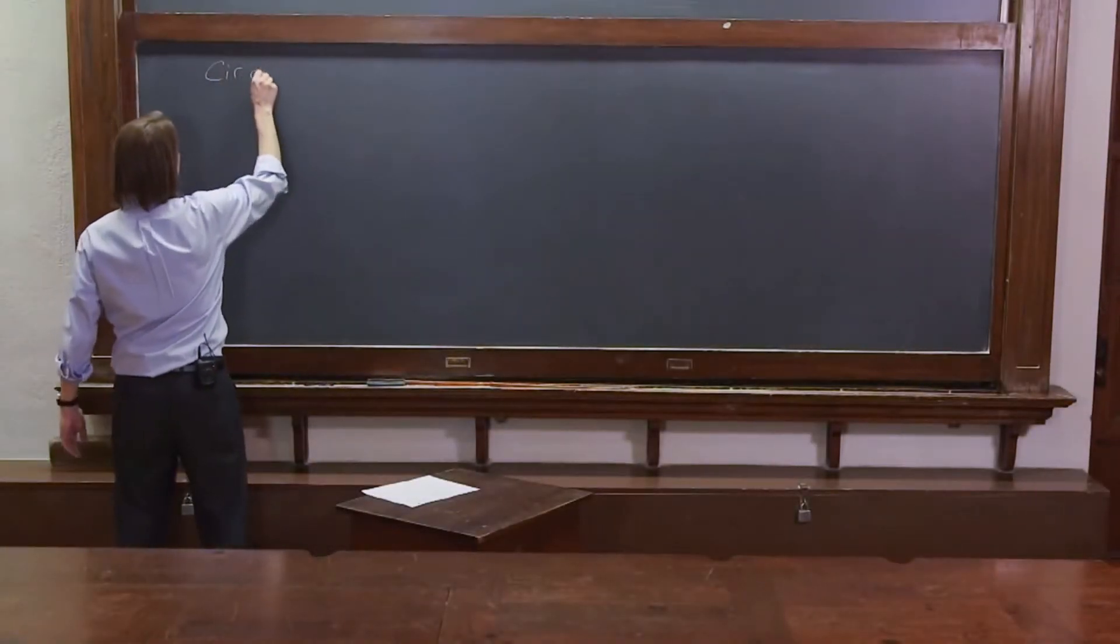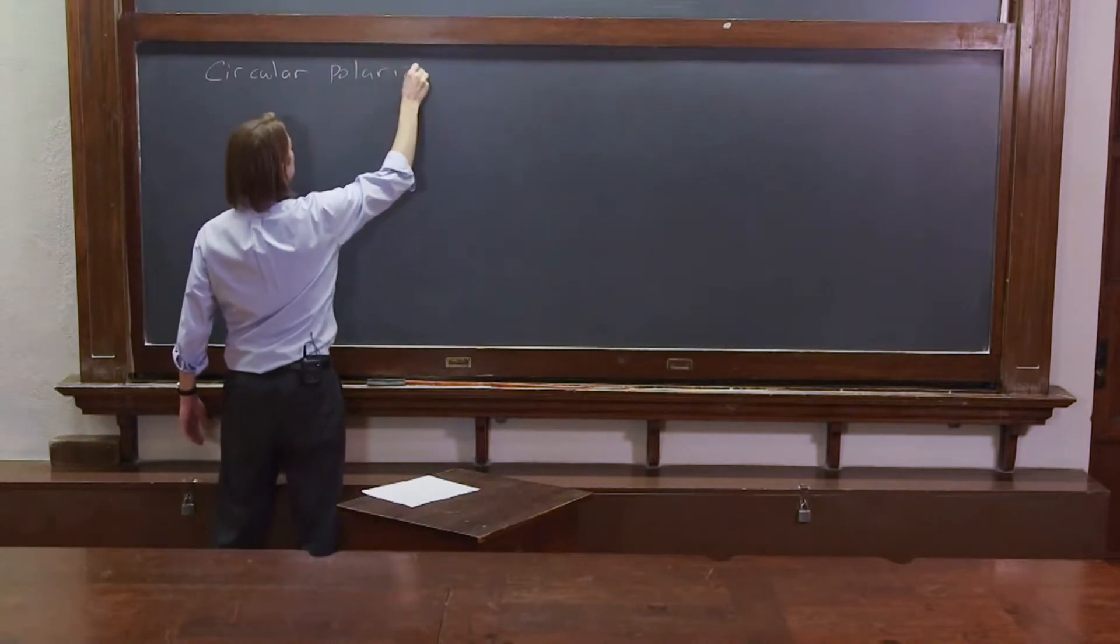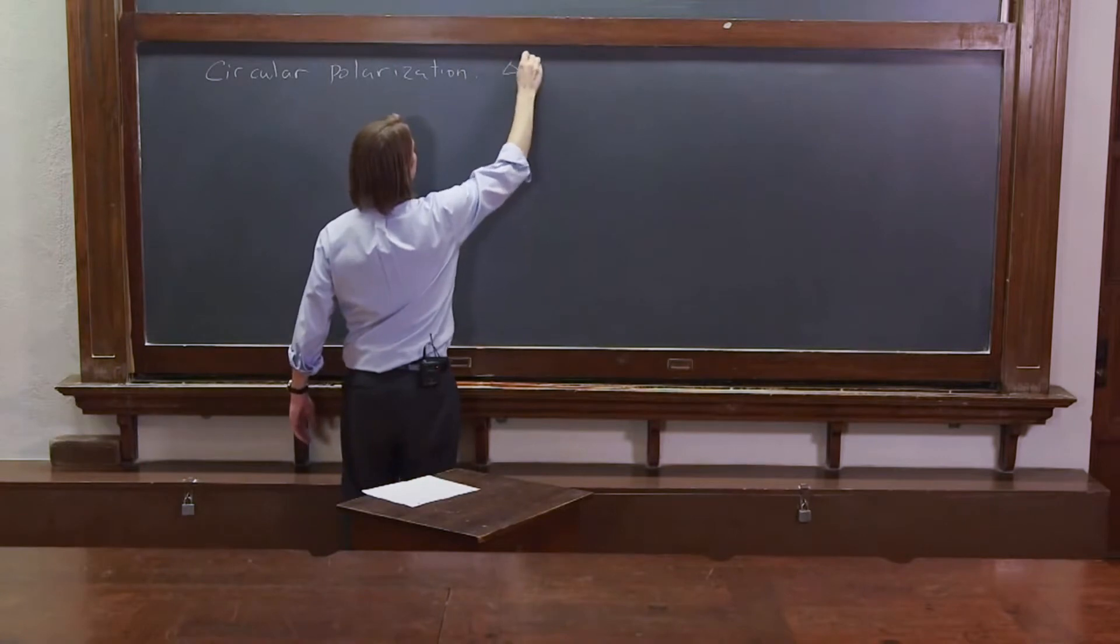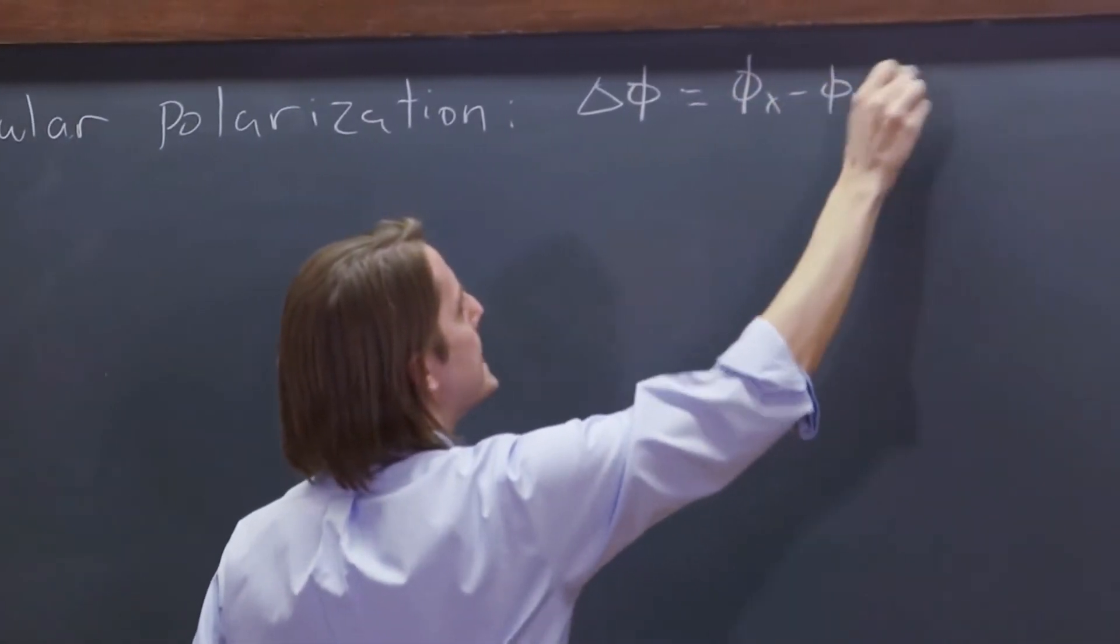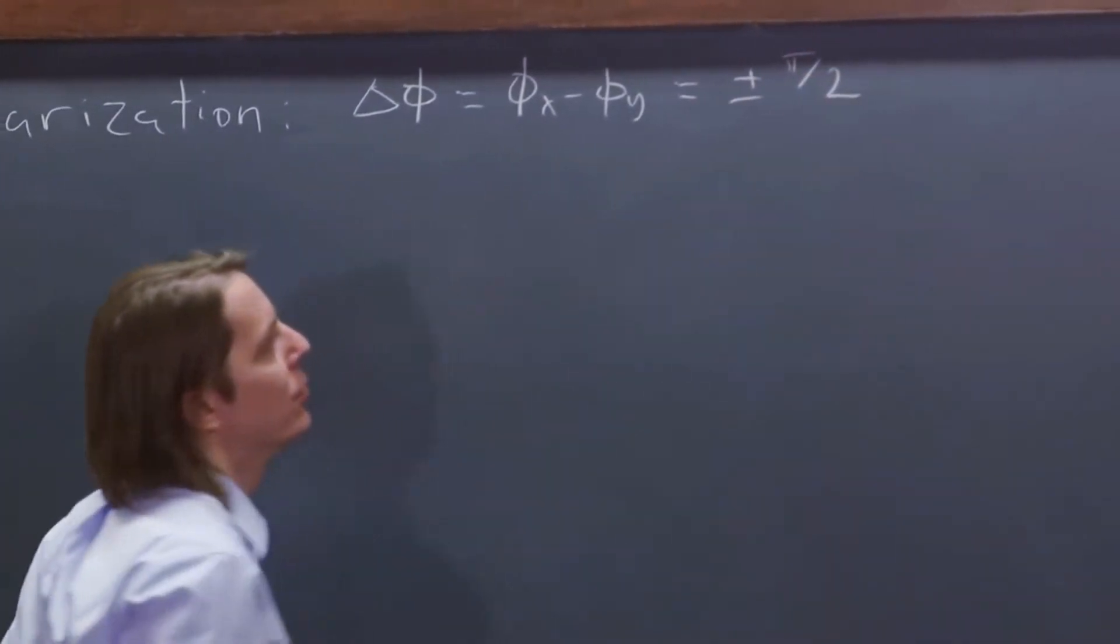Circular polarization occurs, as we saw, when delta phi, which we'll define as phi x minus phi y, is plus or minus pi over 2.